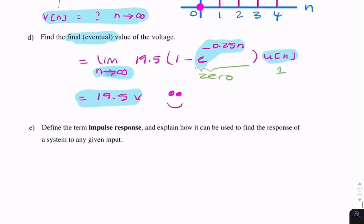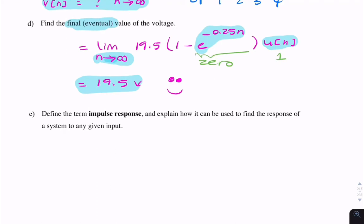Part E, it's a definition. It's asking, what is the impulse response and how do we find it, or how do we use it to find the response for any given input? There's two things you need to do: one, you need to define; two, you need to explain. Each of these need only be a single sentence.